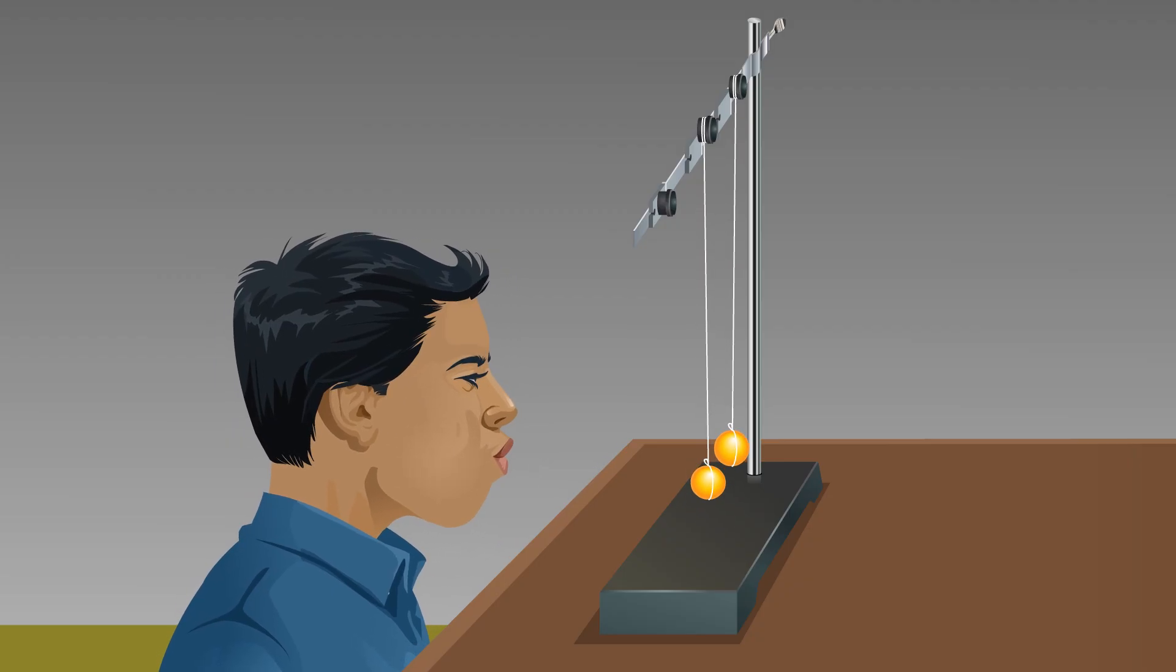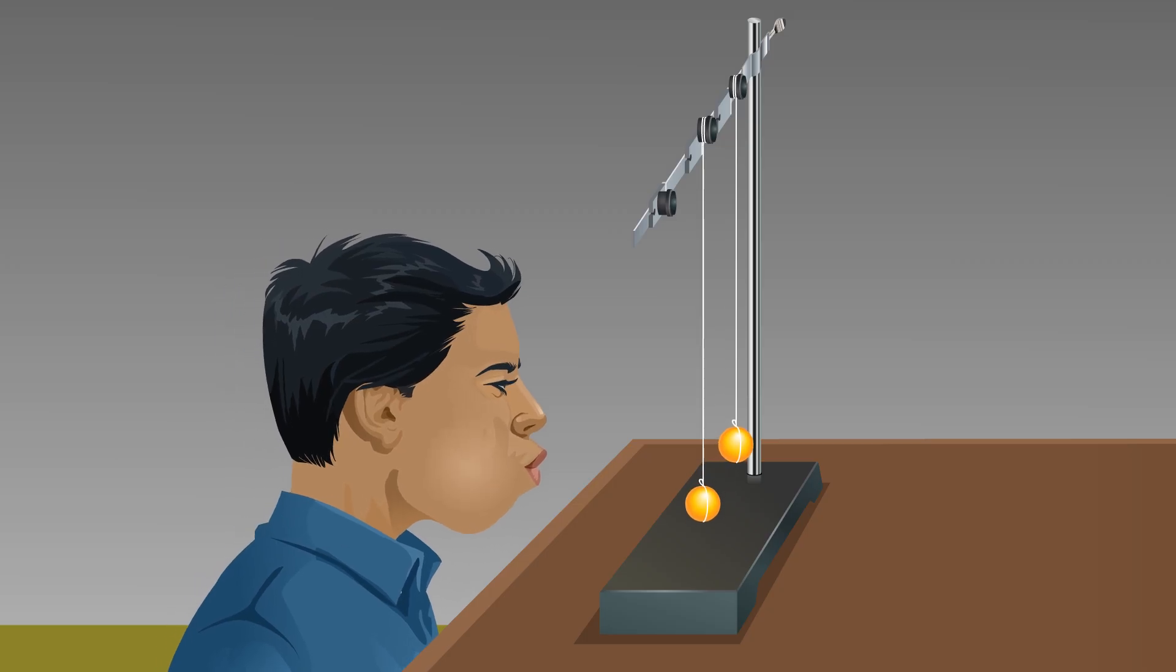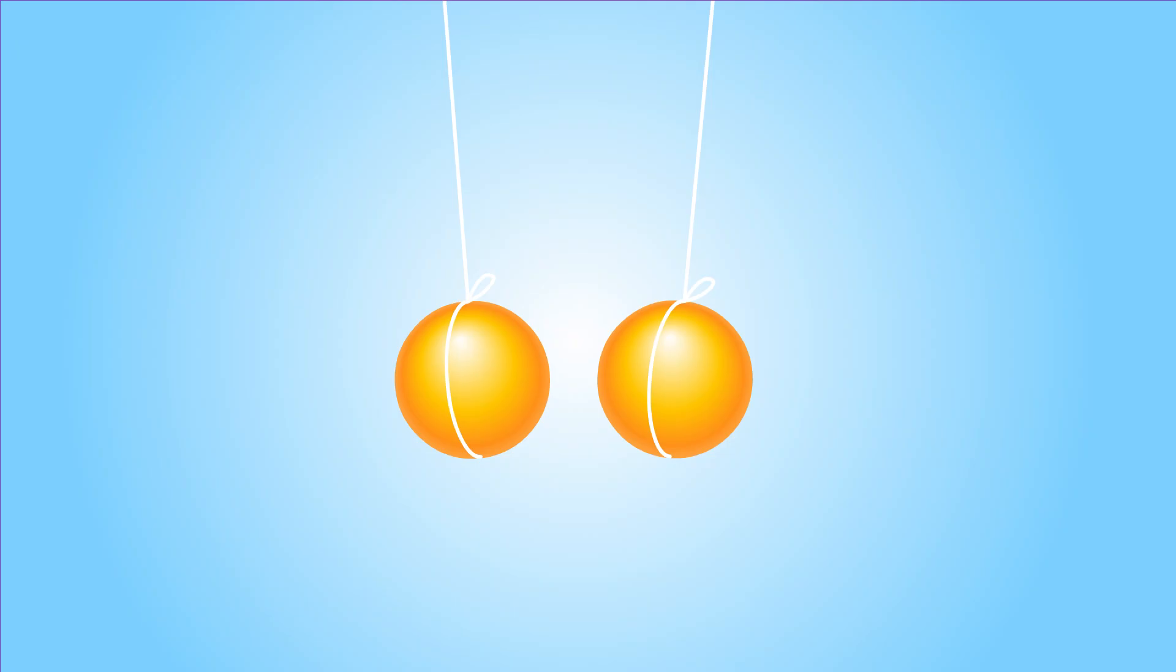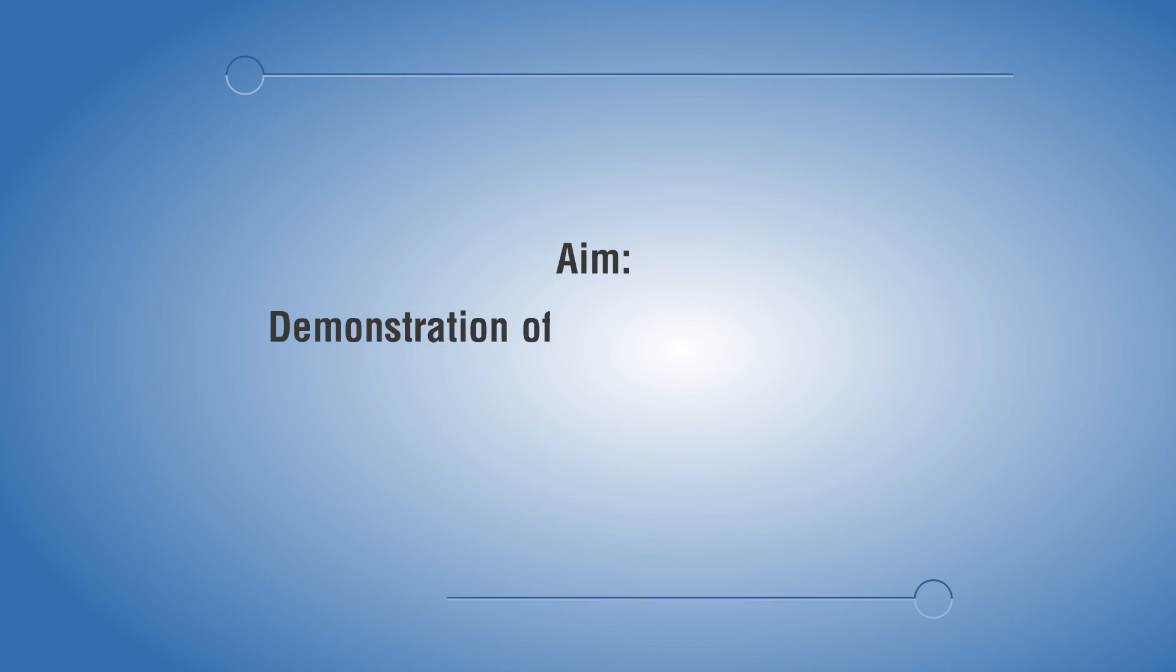Blow into the space between the bobs. Observation: balls move closer to each other. Second illustration: aim demonstration of Bernoulli's theorem using books and paper.